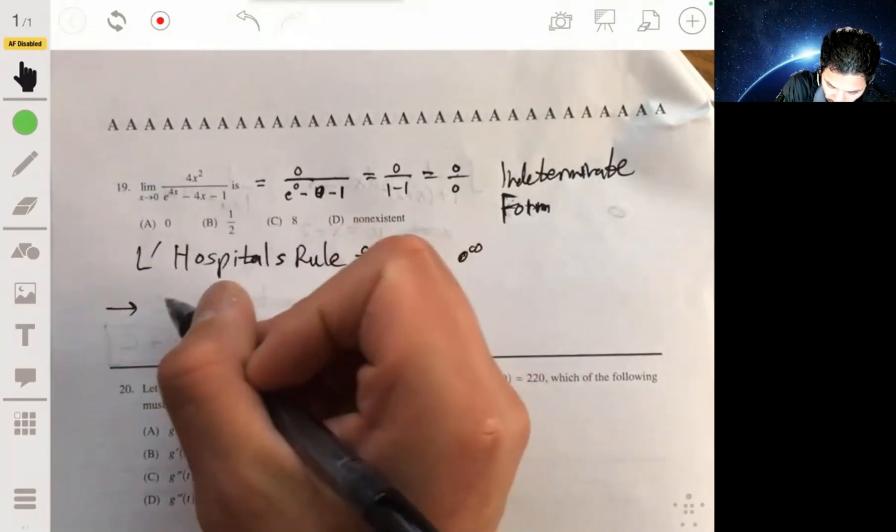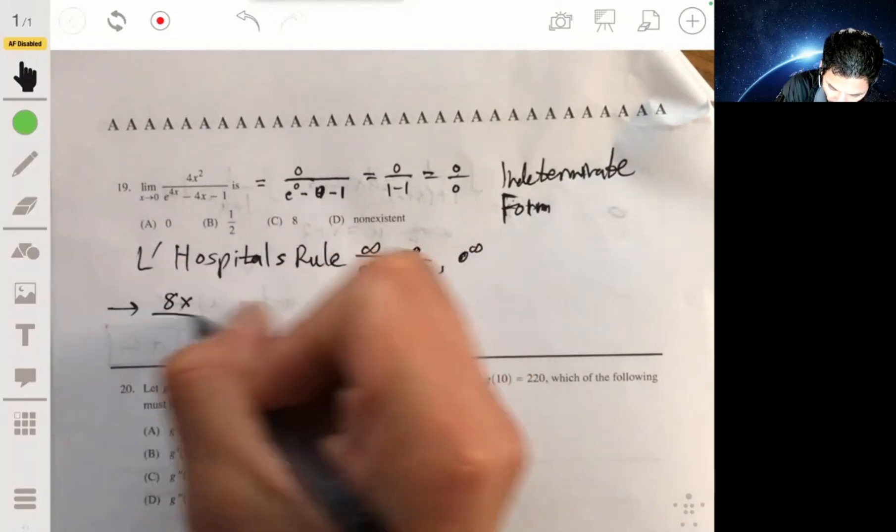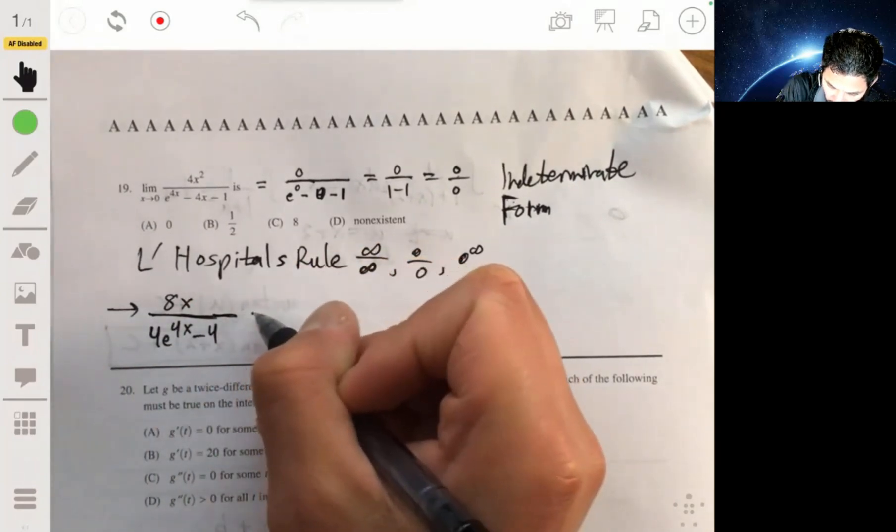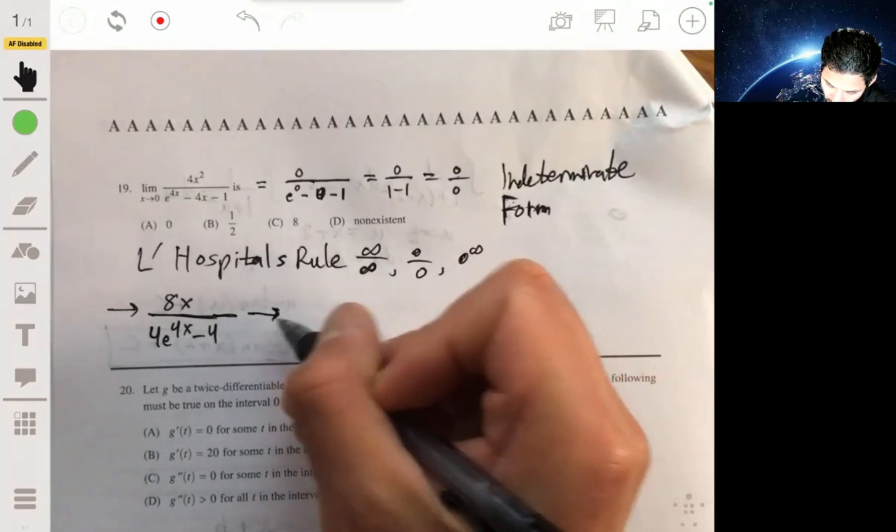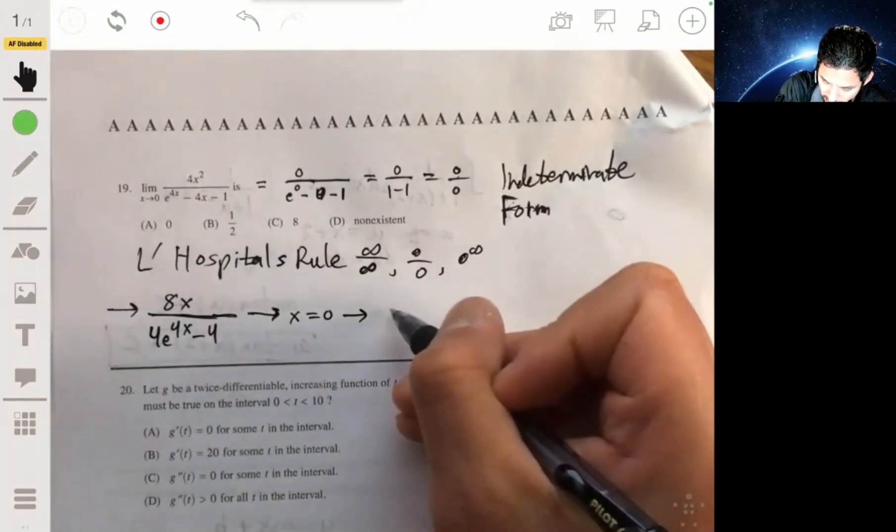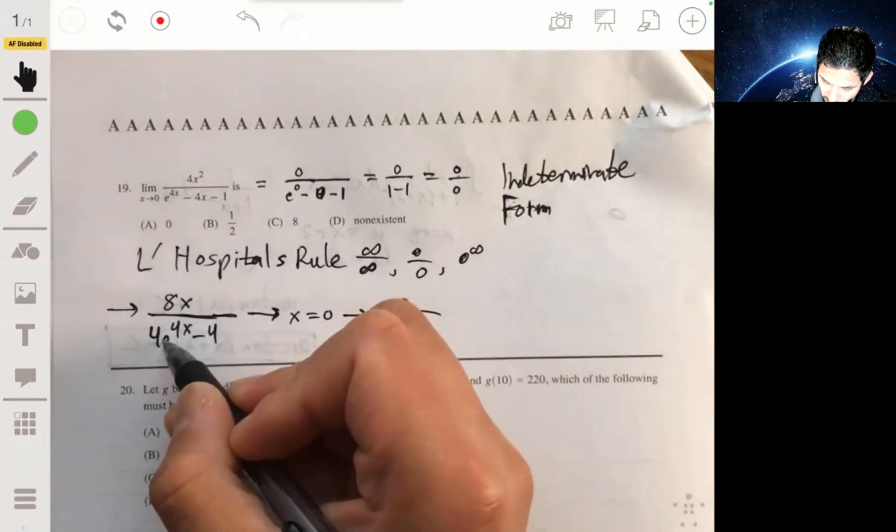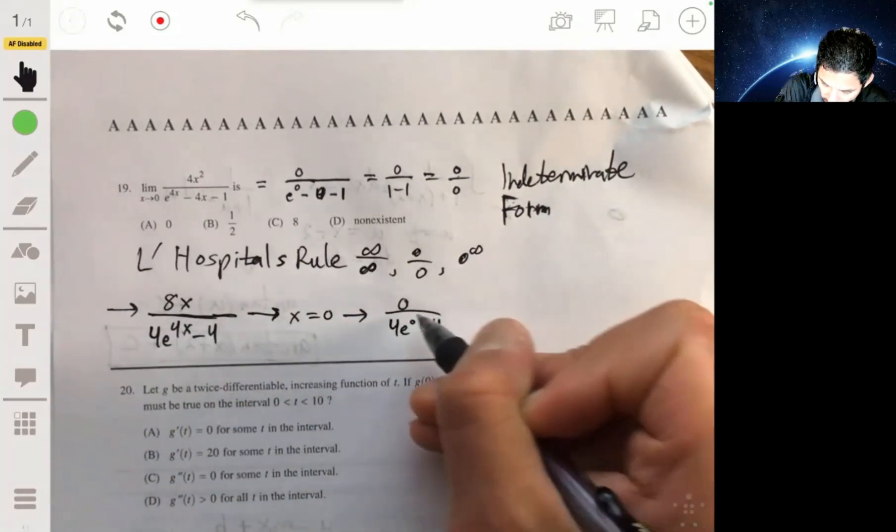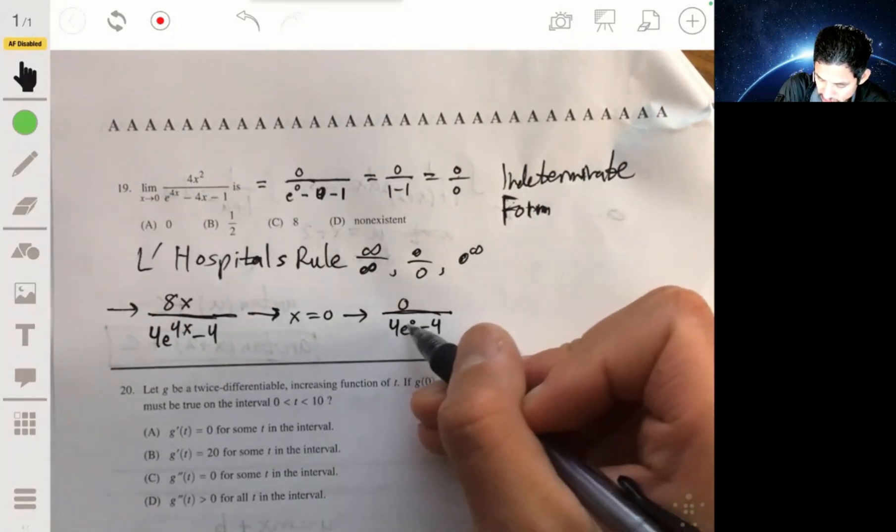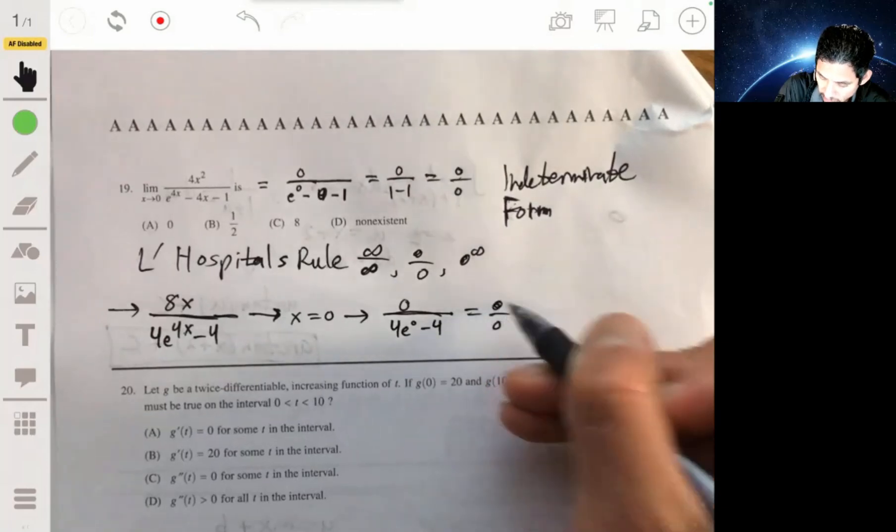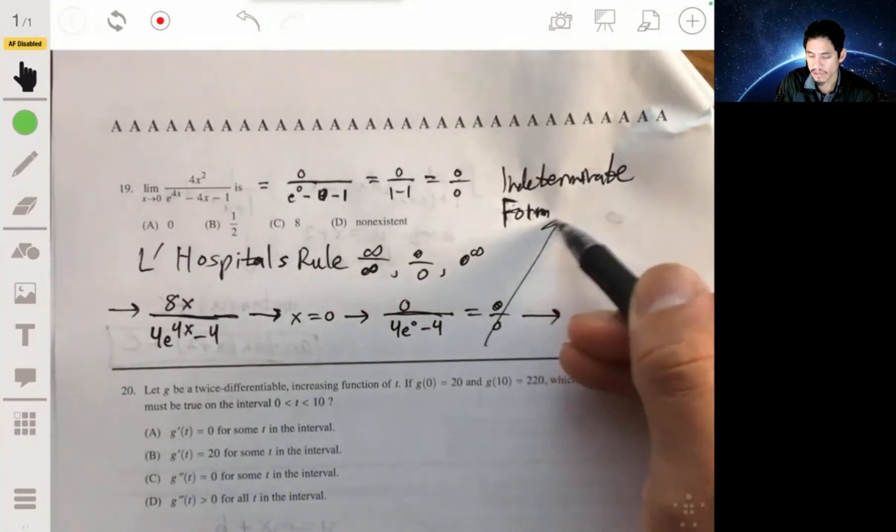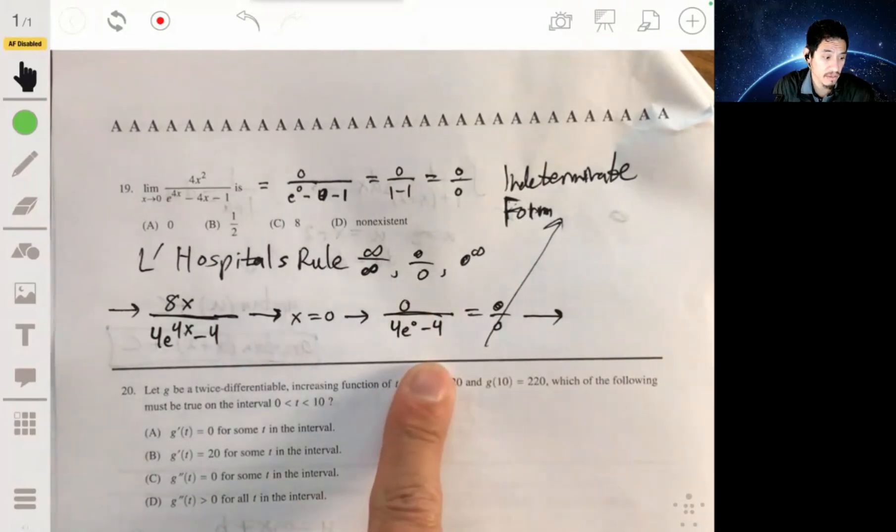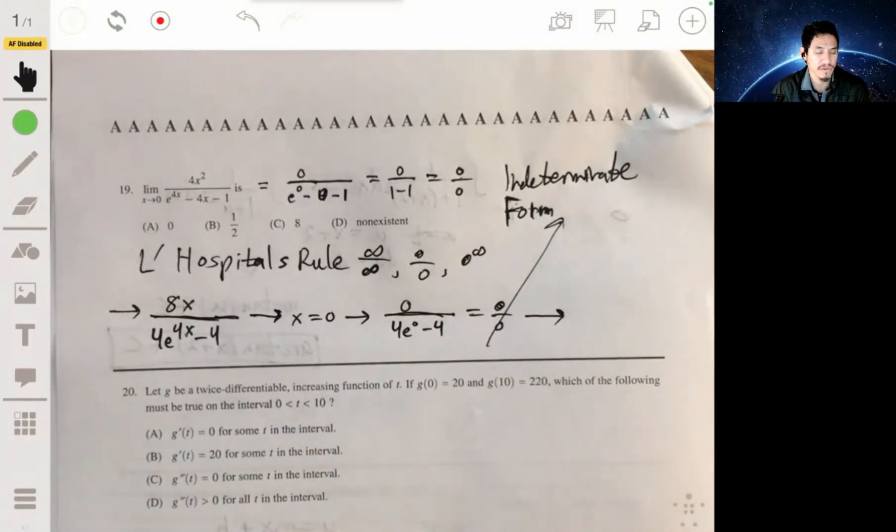So you take the derivative, you get 8x over 4e to the 4x minus 4. And when you plug in 0, this time you'll get 0 over 4e to the 0 minus 4. So 4e to the 0, so you still get 4 minus 4, so you still get 0 over 0. So again, you get the indeterminate form. So if you get an indeterminate form, the good thing about L'Hôpital's rule is you can just do it again.